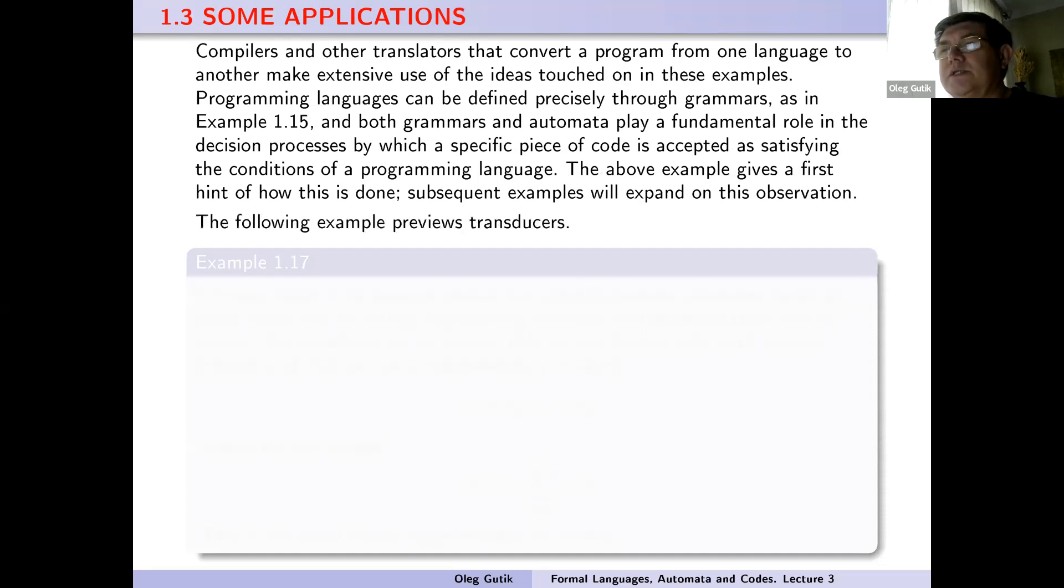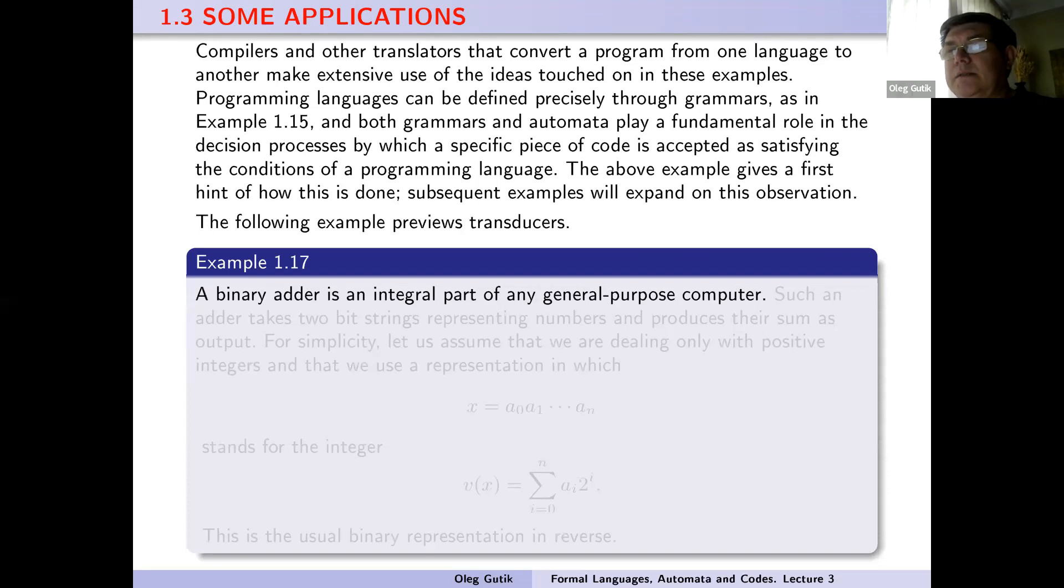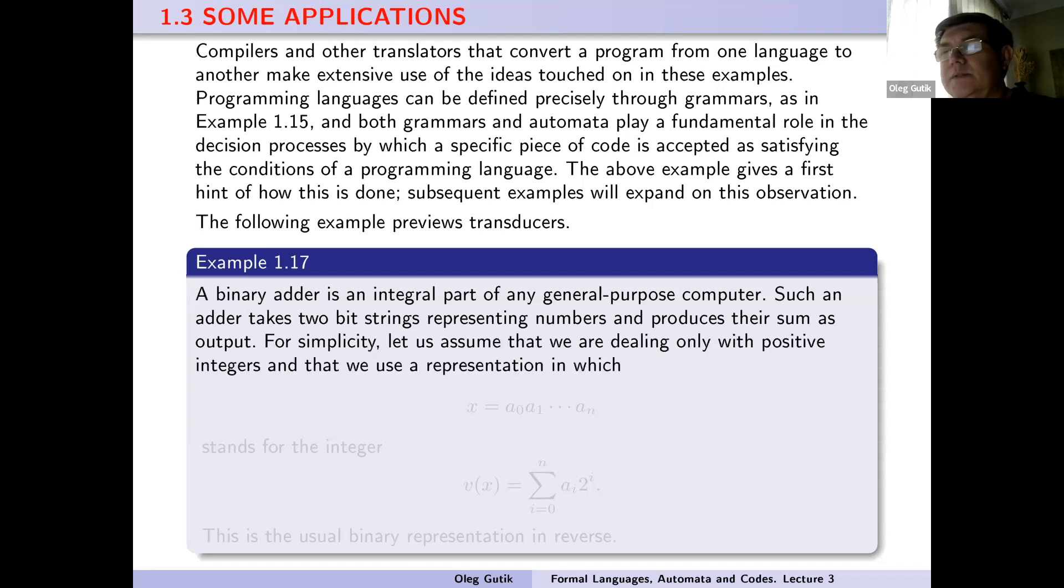The following example: a binary adder is an integral part of any general-purpose computer. A binary adder takes two bit strings representing numbers and produces the sum as output. For simplicity, let us assume that we are dealing only with positive integers and that we use a representation in which x equals a_0 a_1 ... a_n stands for the integer v(x) equal to the sum from i equals 0 to n of a_i times 2 to the power i. This is the usual binary representation, or in reverse.